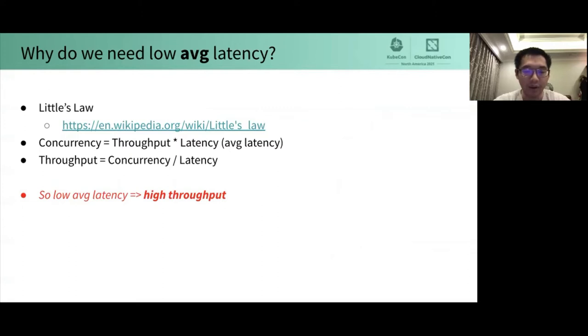According to Little's Law, concurrency is equal to throughput times latency. Also throughput is equal to concurrency divided by latency. Please note that the latency here is average latency. So if average latency is lower, the throughput will be higher when the concurrency is the same.